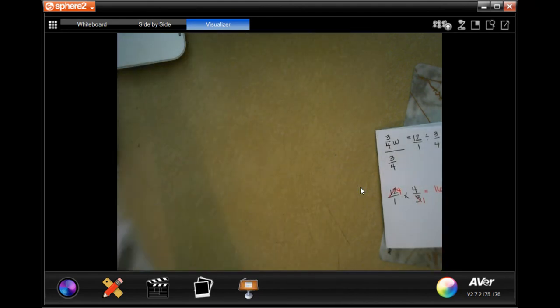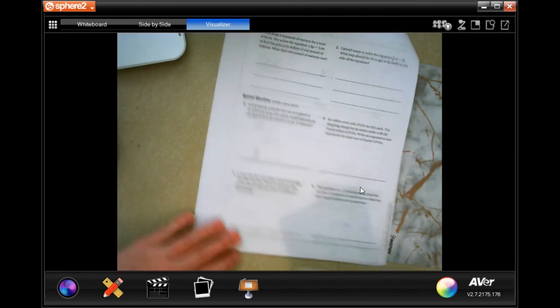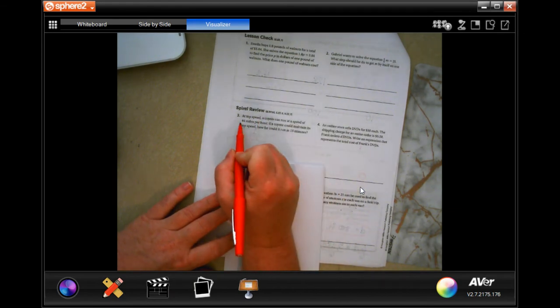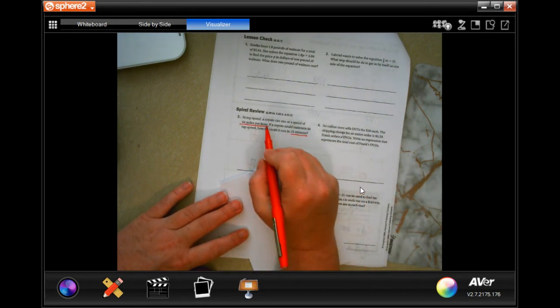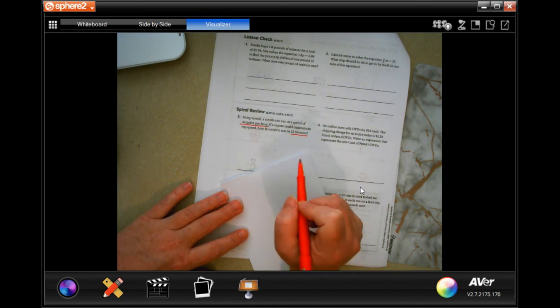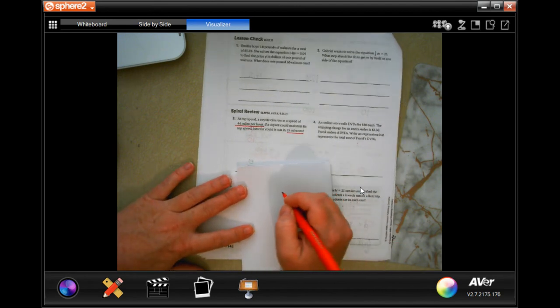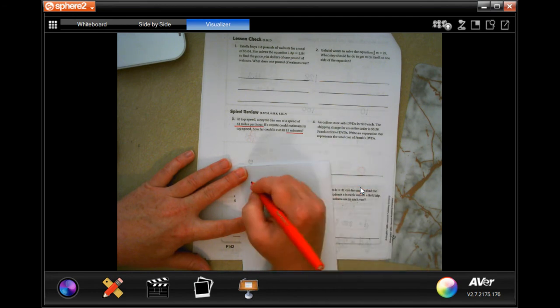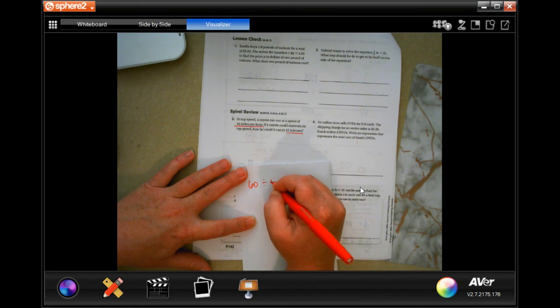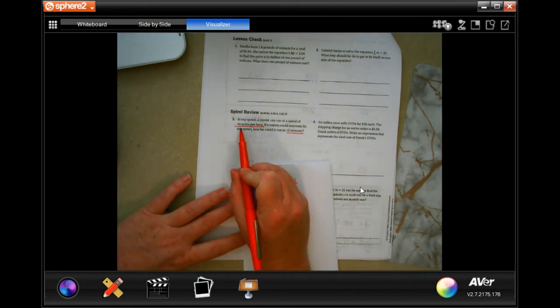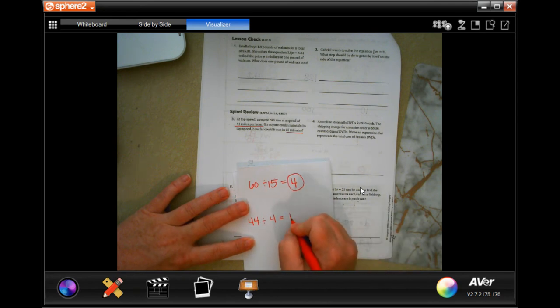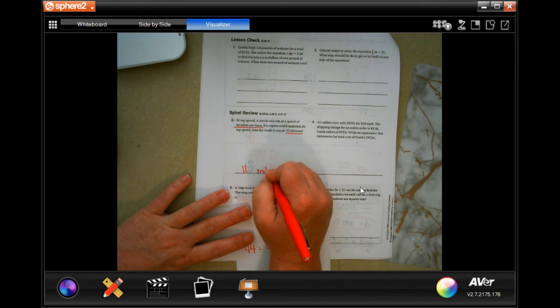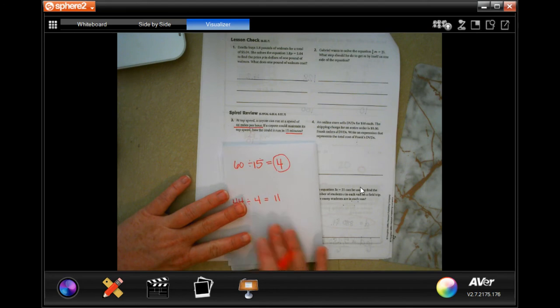We're going to the back where you guys are going to do a lesson check because you're geniuses. And we are going to go ahead and do this final review. At top speed, a coyote can run a speed of 44 miles per hour. If a coyote could maintain its top speed, how far could it run in 15 minutes? Well, in one hour, there are four sets of 15 minutes. Because the 60 minutes in an hour divided by that 15 is four.